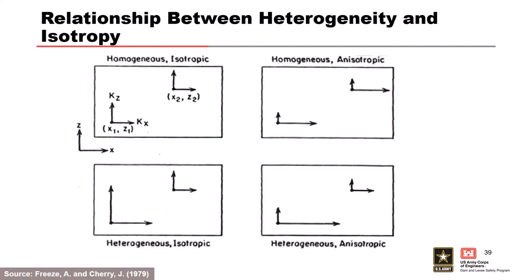Here's a graphic showing different types of relationships between heterogeneity and anisotropy. First example: homogeneous isotropic soil — permeability is the same at locations x1 and x2, and the same in the Kv and Kx directions. Second: homogeneous anisotropic soil — same permeability at each location but different permeabilities in the two directions. Third: isotropic but heterogeneous — same permeability in all directions but different at different locations. Fourth: heterogeneous anisotropic — different permeabilities at each location and in each direction, which complicates your analysis.